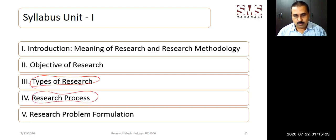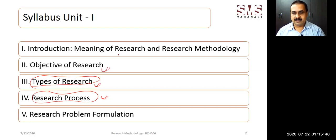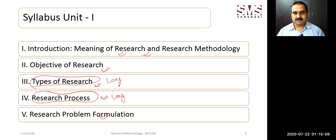From an examination point of view, the two most important sections are types of research and research process — these are long answer type questions likely to be asked at the time of examination, so we need to cover them in detail. Research objectives, meaning of research and research methodology, and research problem formulation may be asked as short answer type questions. So two very important long-answer questions are going to be covered in the first unit itself.